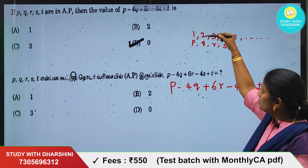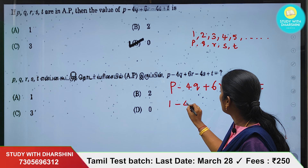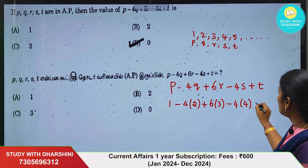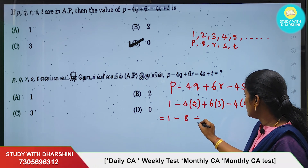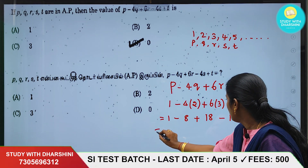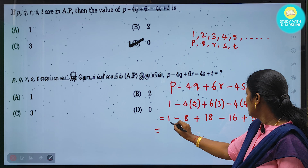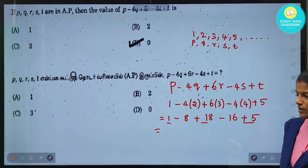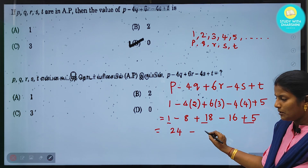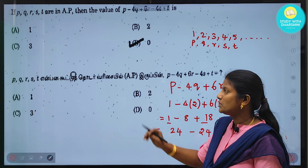Substituting values: P=1, Q=2, R=3, S=4, T=5. So: 1 - 4×2 + 6×3 - 4×4 + 5 = 1 - 8 + 18 - 16 + 5. Adding positives: 1 + 18 + 5 = 24. Adding negatives: 8 + 16 = 24. So 24 - 24 = 0. The answer is option D: 0.